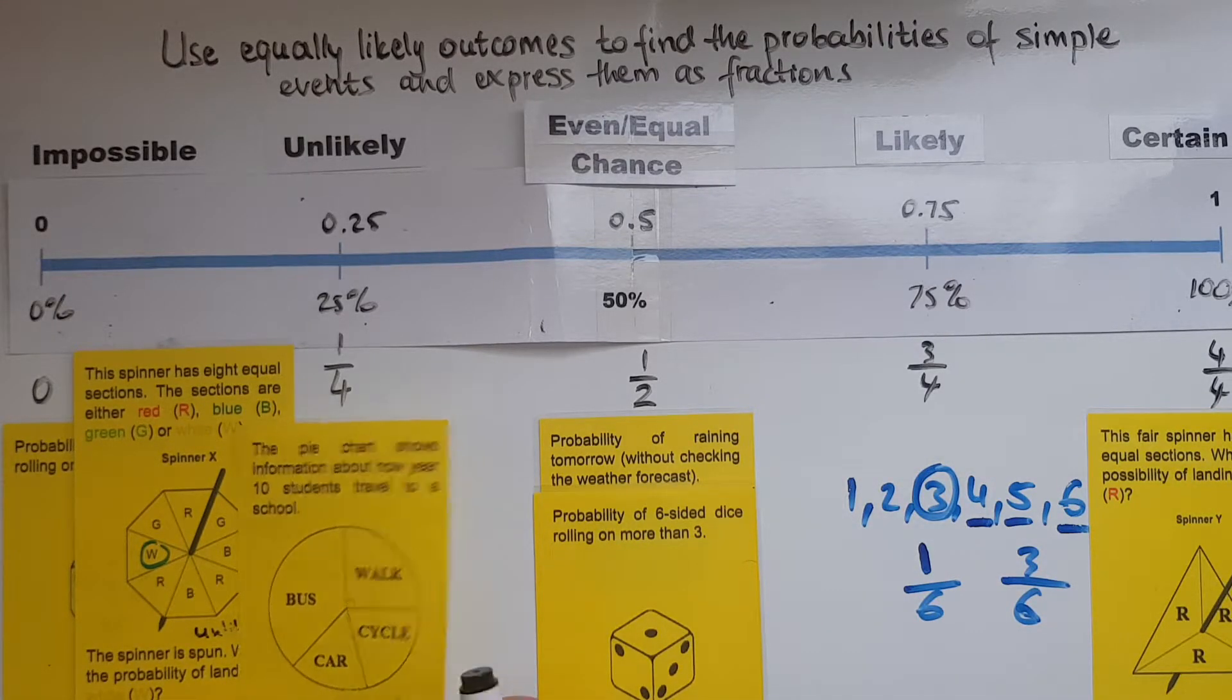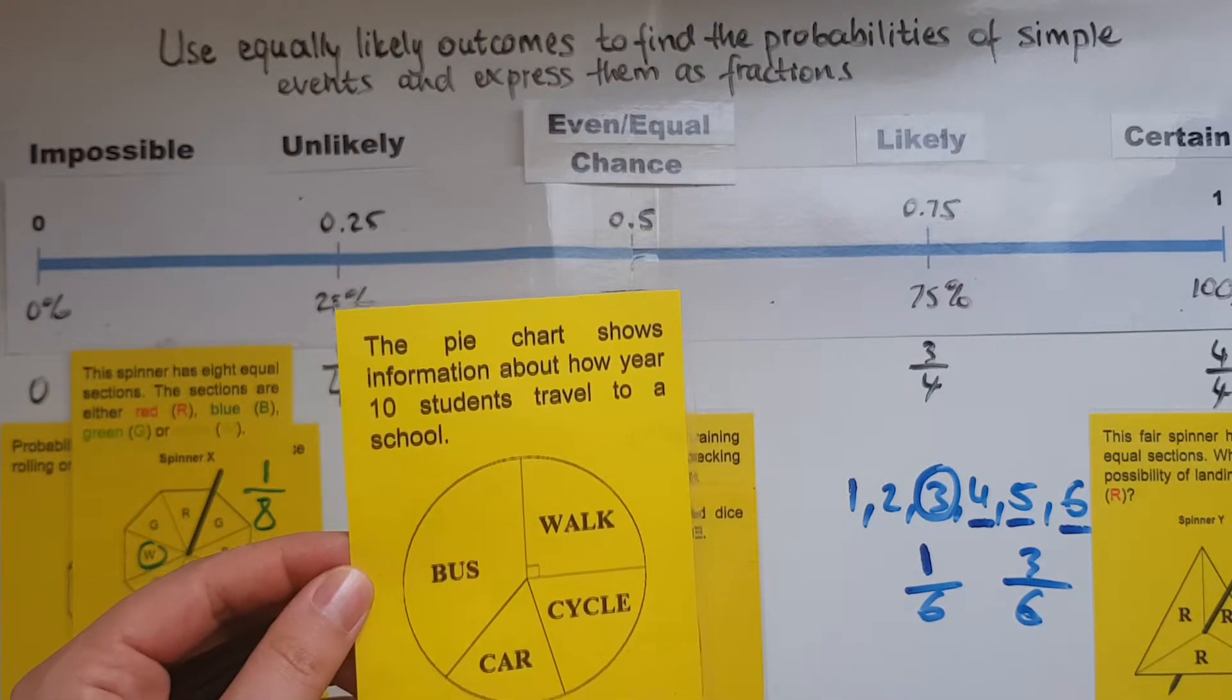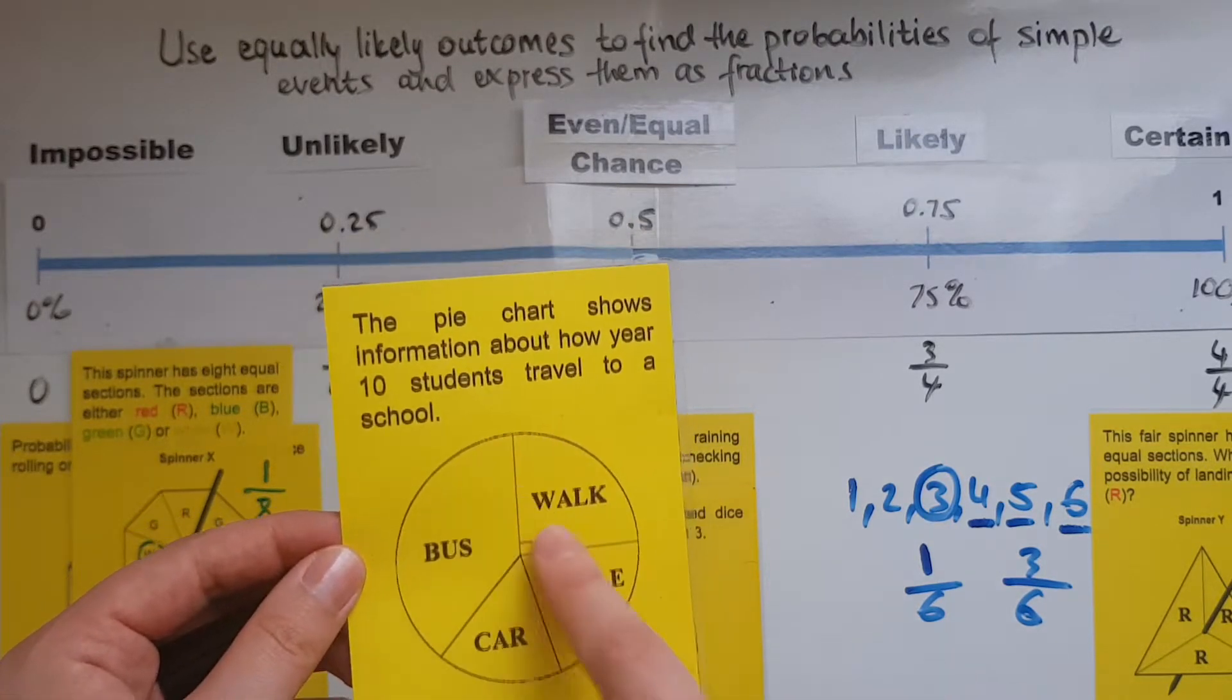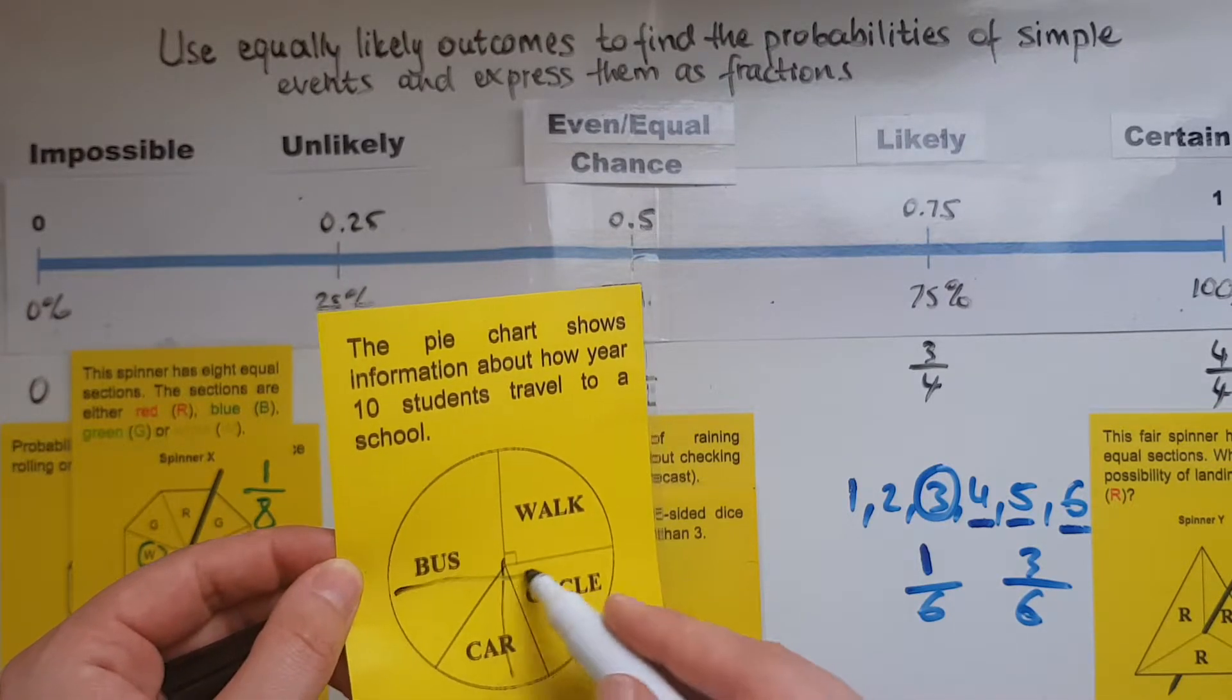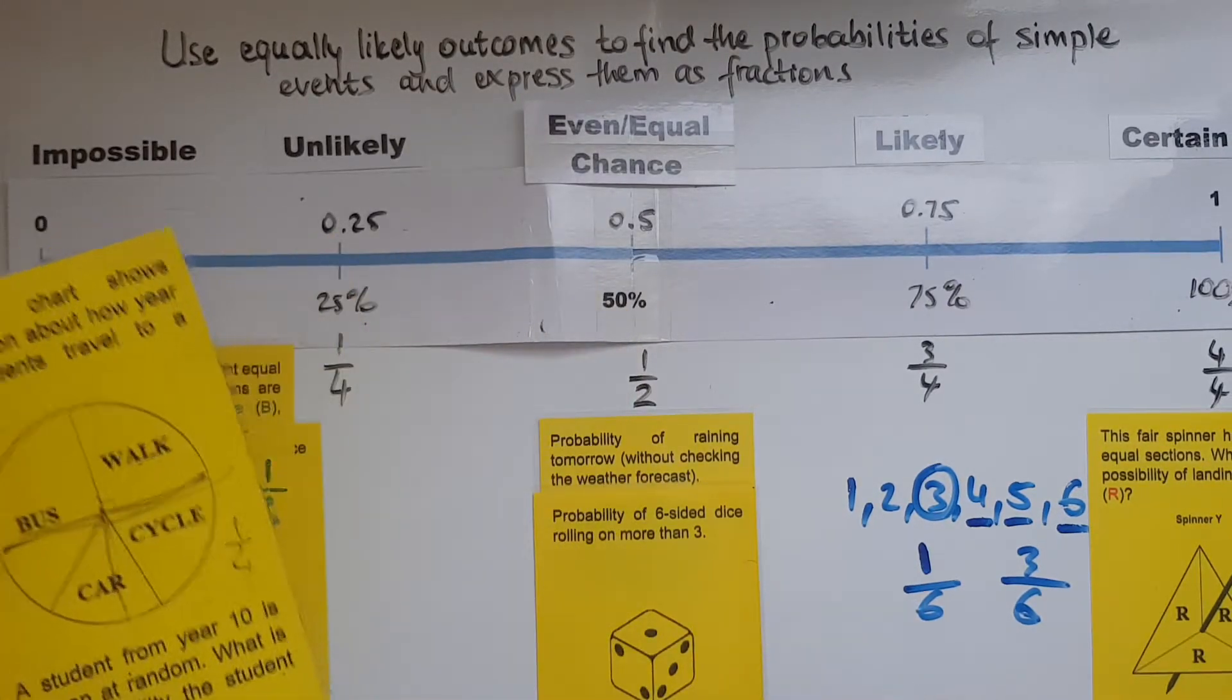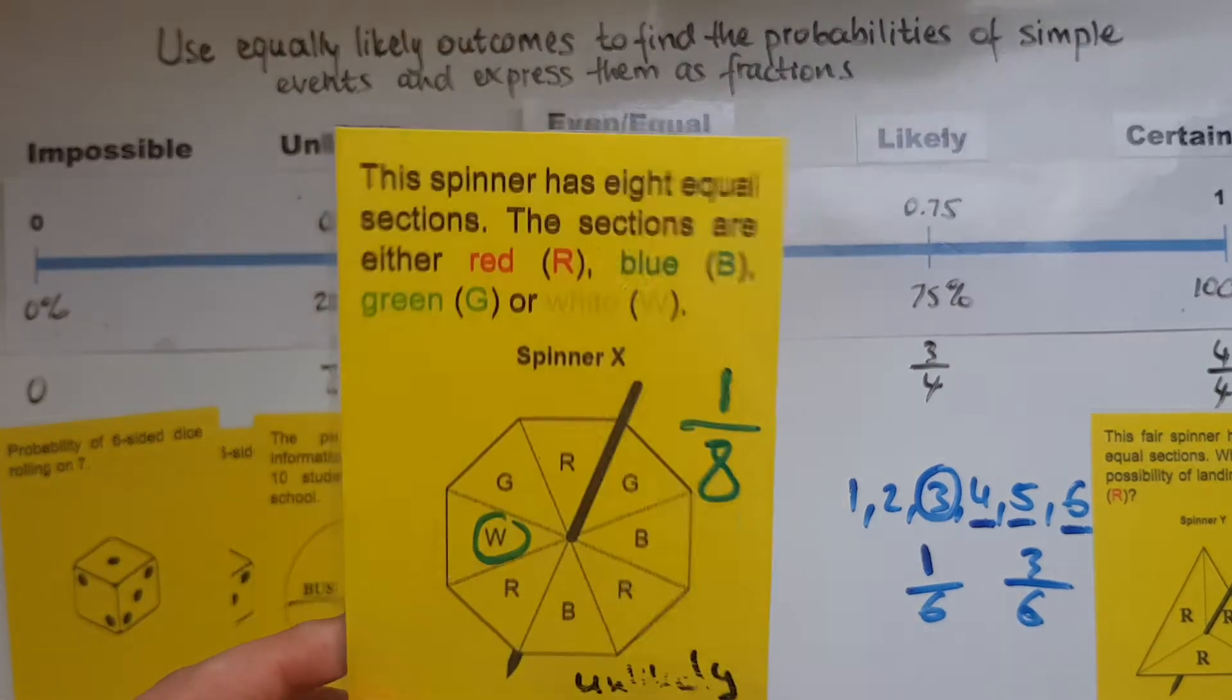And we looked at this. The pie chart shows information about how year 10 students travel to school. A student from year 10 is chosen at random. What is the probability the student walks to school? So walk represents a quarter of the full circle. So that is one out of four or a quarter or 25%.